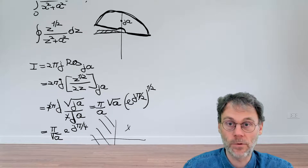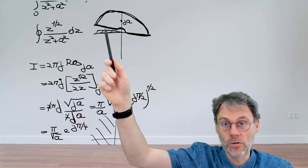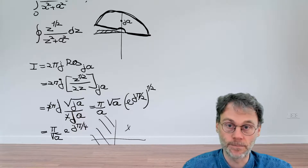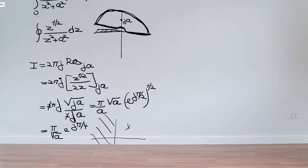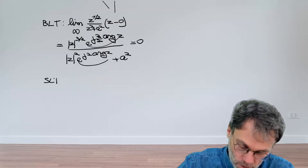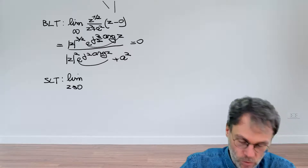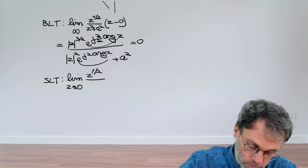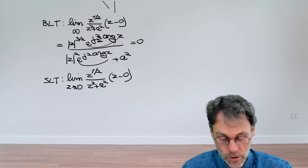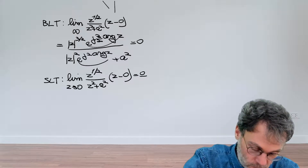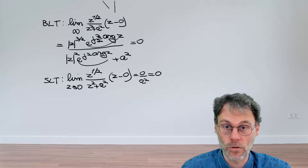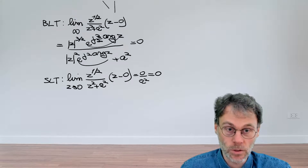Next, we consider the small semicircle introduced to stay clear of the branch point. Applying the small limit theorem and taking z → 0 of z^(1/2)/(z²+a²) times z, this becomes 0 divided by a², which is zero. So this contribution also vanishes, meaning we don't have to worry about the branch point contribution at all. We've eliminated all the circular arc contributions.